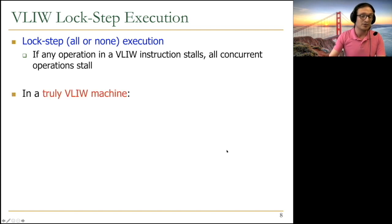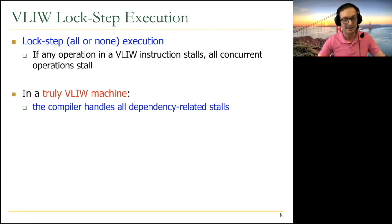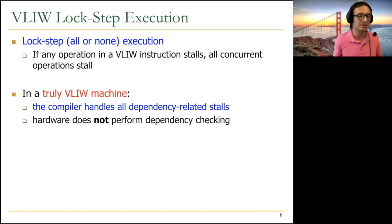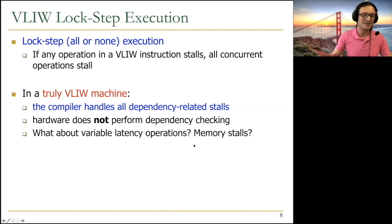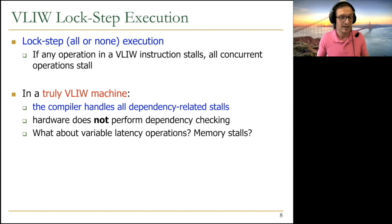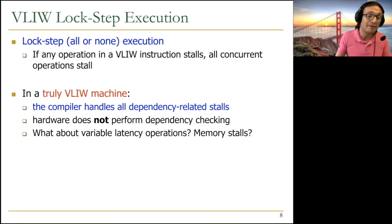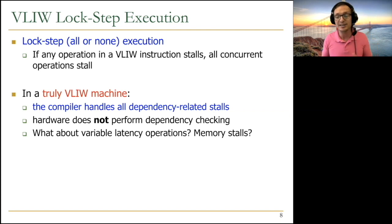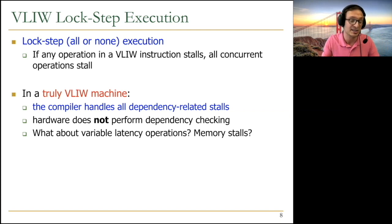In a truly VLIW machine, the compiler handles all dependency-related stalls and hardware does no dependency checking — including between pipeline stages. The philosophy is similar to RISC: simple instructions, simple hardware, complex compiler. But variable-latency operations like cache misses create problems. The compiler can't know if a load will miss in cache, so some hardware interlocking is unavoidable, and whenever stalling occurs, all instructions stall.